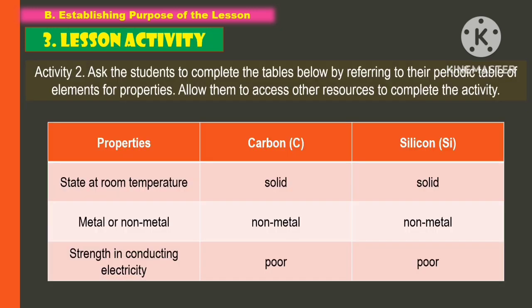Another comparison of elements: we have carbon and silicon. When it comes to state at room temperature, both are solid. For metal or non-metal, both are non-metal. And when it comes to strength in conducting electricity, both are poor.